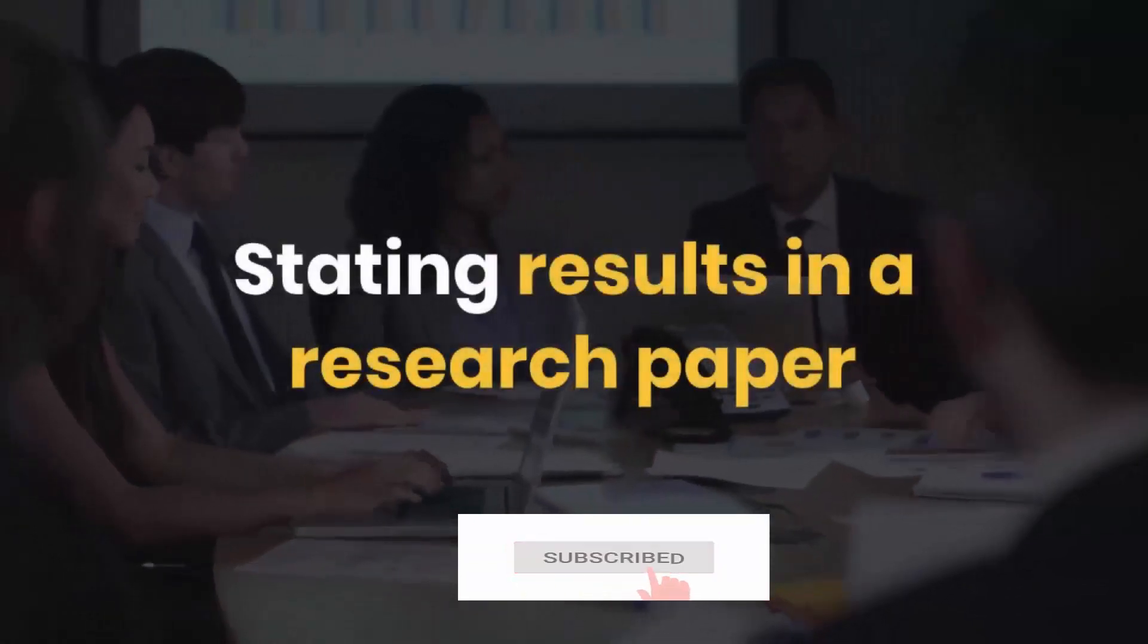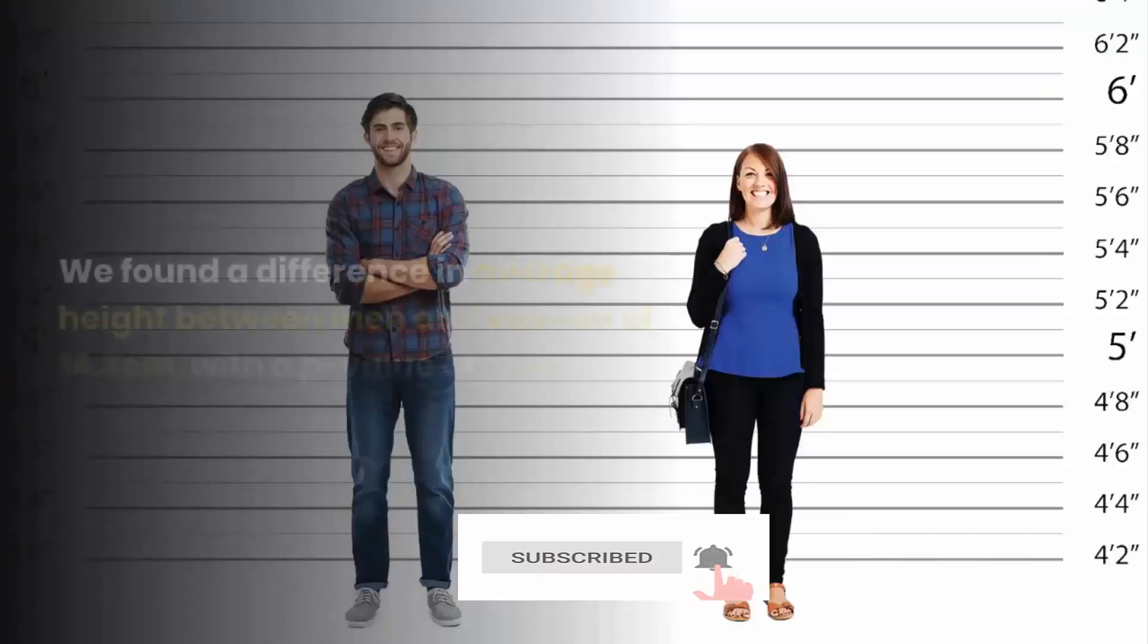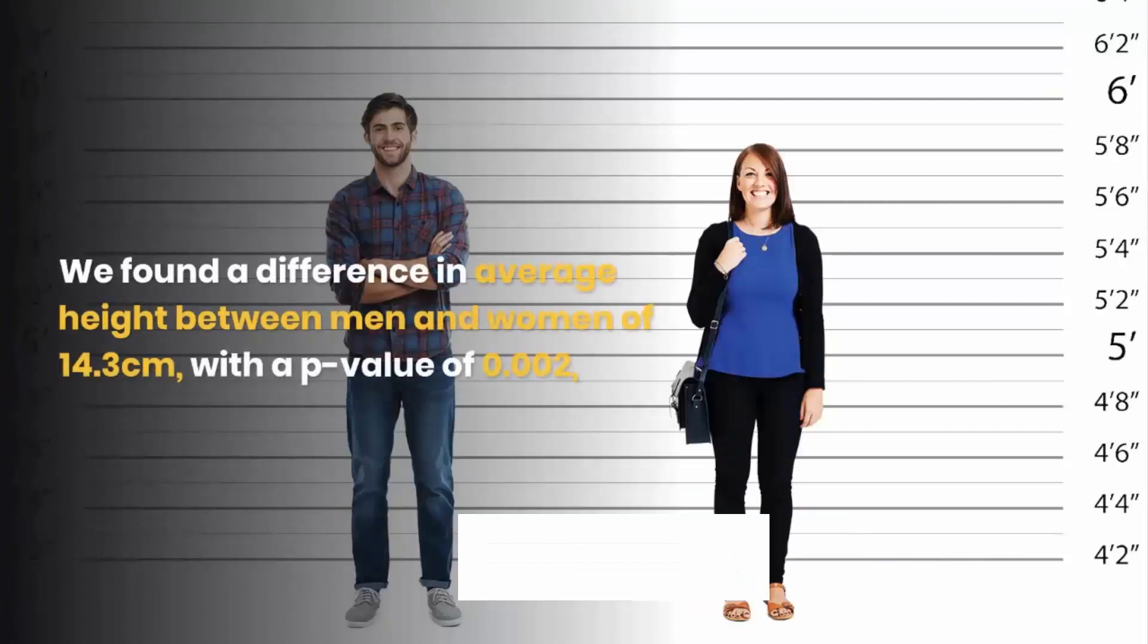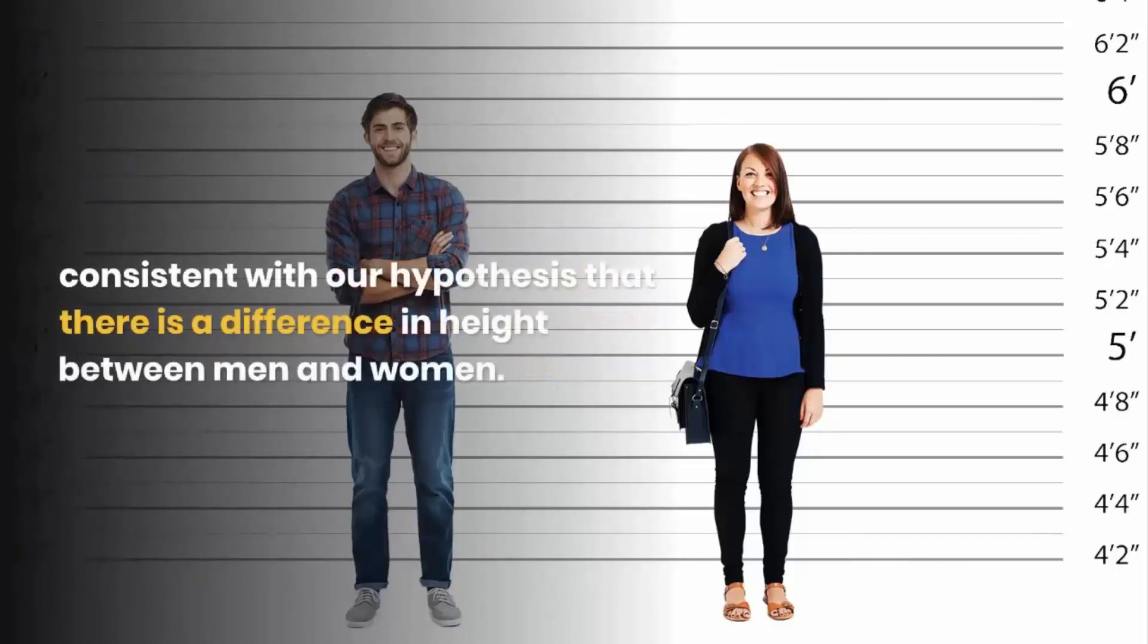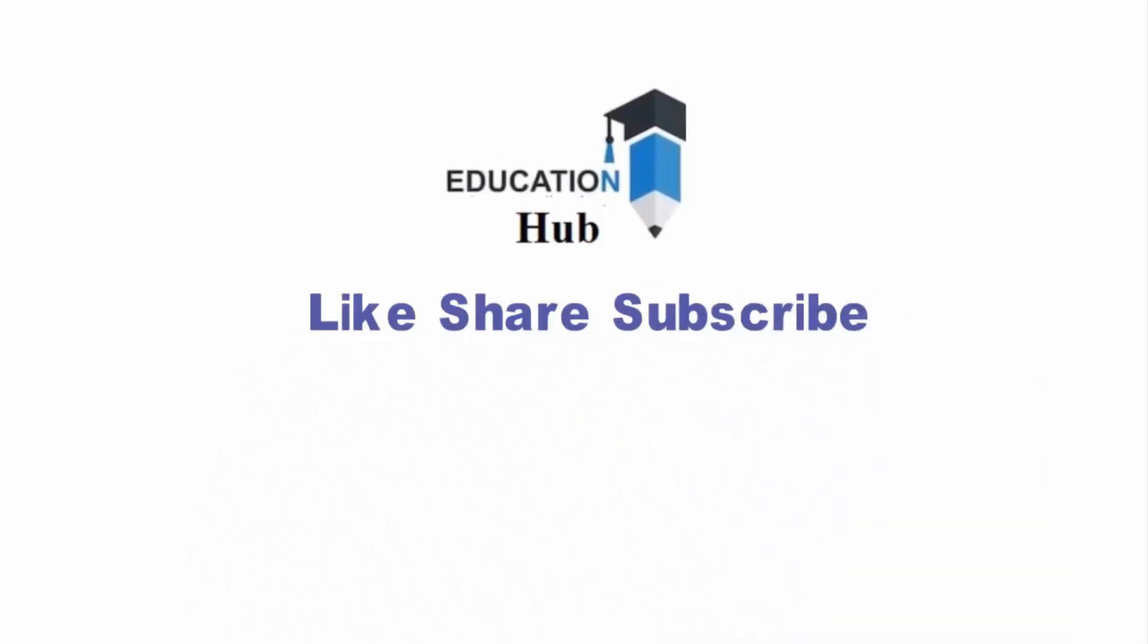Stating results in a research paper: We found a difference in average height between men and women of 14.03 centimeters, with a p-value of 0.002, consistent with our hypothesis that there is a difference in height between men and women. Thank you for watching. I hope you can easily understand how to test hypothesis. Like, share, and subscribe my channel for more informative videos about research.